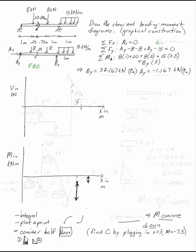Now you have to do equilibrium. I've already gone ahead and done this for you. As you sum the forces in the xy and sum the moments, you can solve to find that By is 32.167 kN and Ay is 1.167 kN. If you solve the equilibrium equations, Ay is actually in the negative direction.